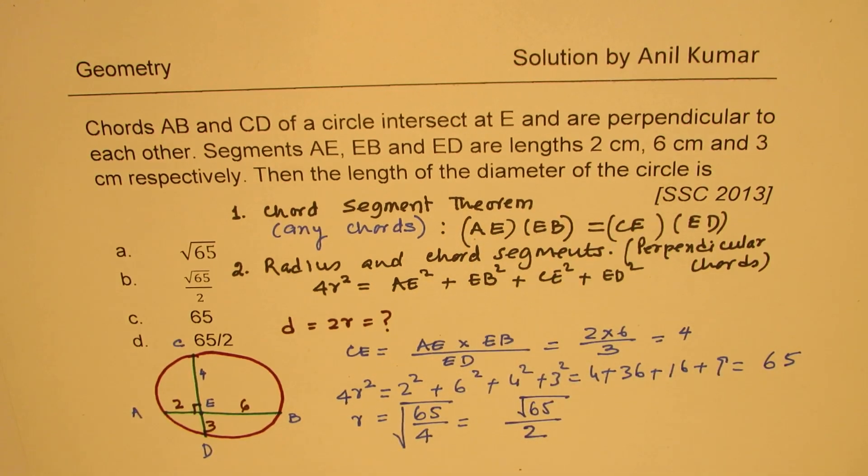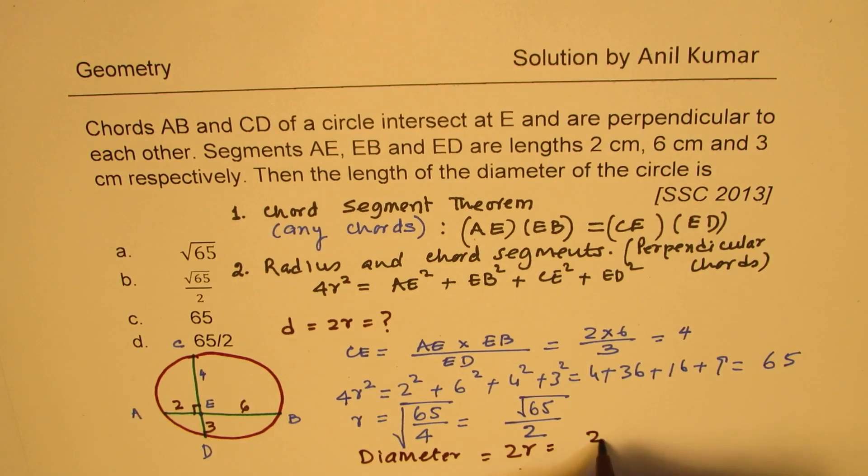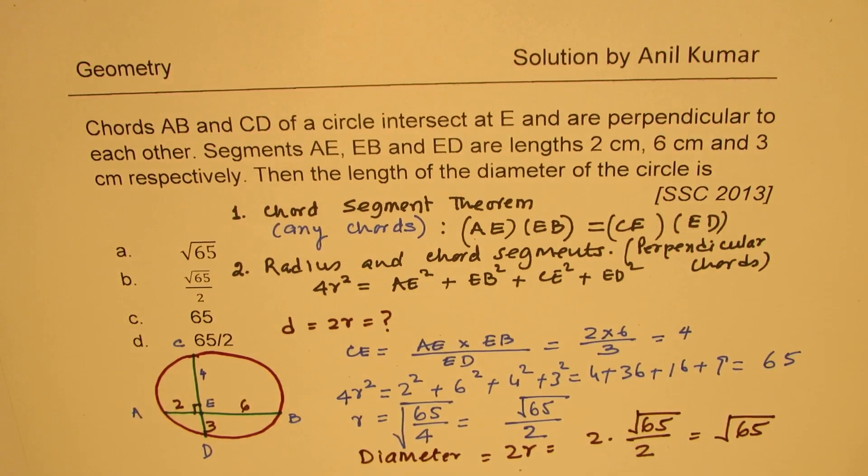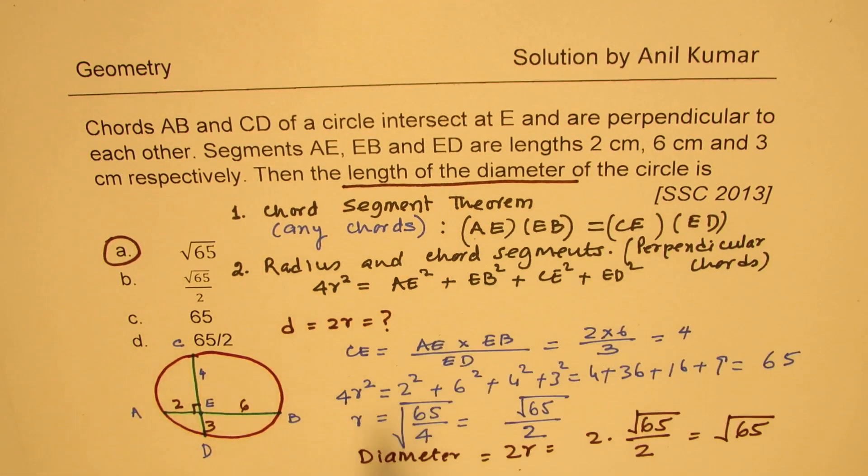Then find the length of the diameter. So what is diameter? Diameter is two times radius. So the diameter will be two times square root of 65 divided by two. So that gives you square root of 65 as your answer. So option A is the right option. Is that clear to you? So that is how we can find the solution of such questions in less than a minute. So basically, first you find the given missing side of the chord segment just by product six times two, twelve divided by three, which is four. Then you add the squares of these divided by four square root to get your answer for the radius. Since it is length of the diameter, you have to multiply this radius by two. So when you multiply by two, you get square root of 65 as your answer.